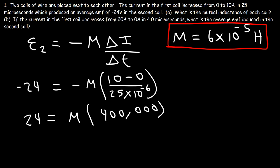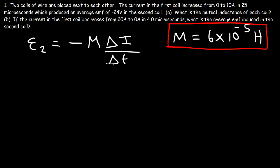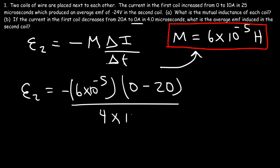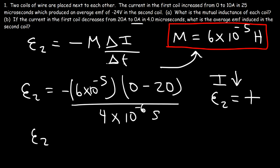Now let's move on to part B. If the current in the first coil decreases from twenty to zero amps in four microseconds, what is the average EMF induced in the second coil? Now that we have the mutual inductance, we can calculate the induced EMF. M is 6 times 10 to the minus 5, the change in current is zero minus twenty, and the change in time is 4 times 10 to the minus 6 seconds. Because the current is decreasing, the induced EMF should be positive. So it's negative 6×10⁻⁵ multiplied by negative 20 divided by 4×10⁻⁶, giving an induced EMF of positive 300 volts.